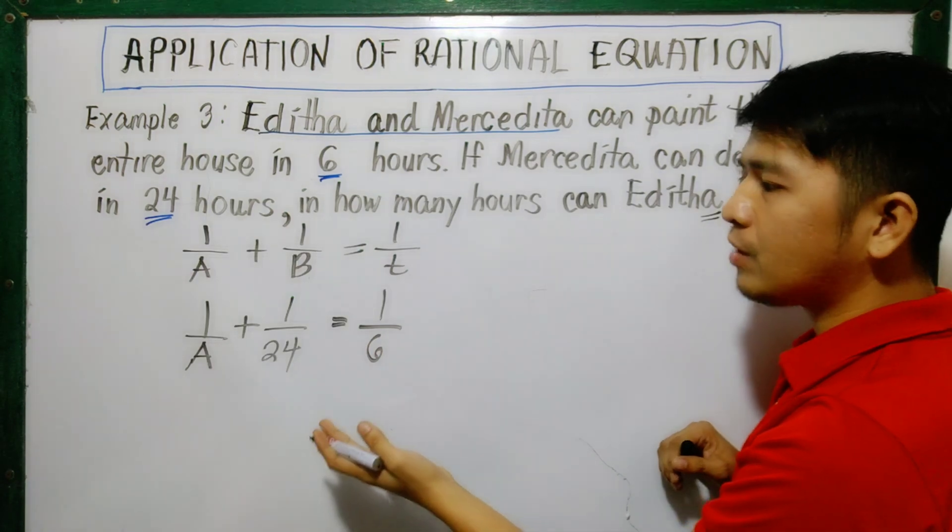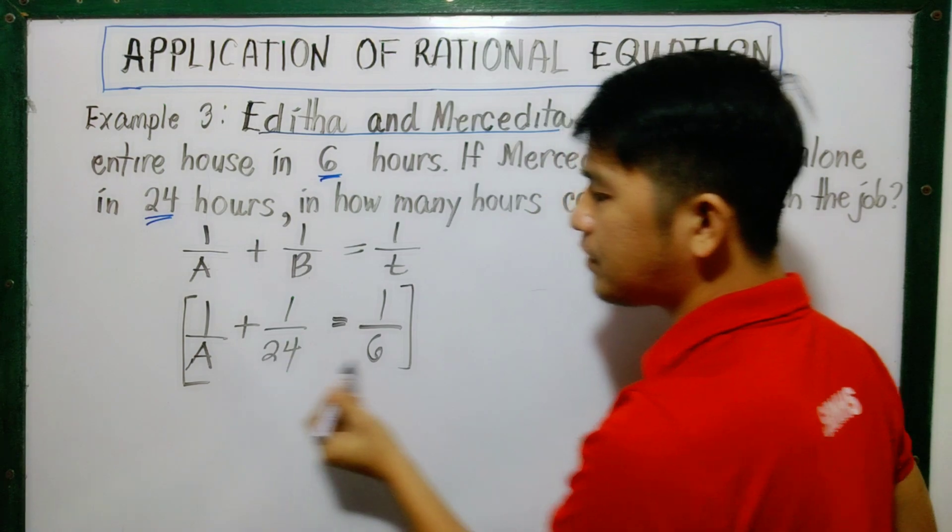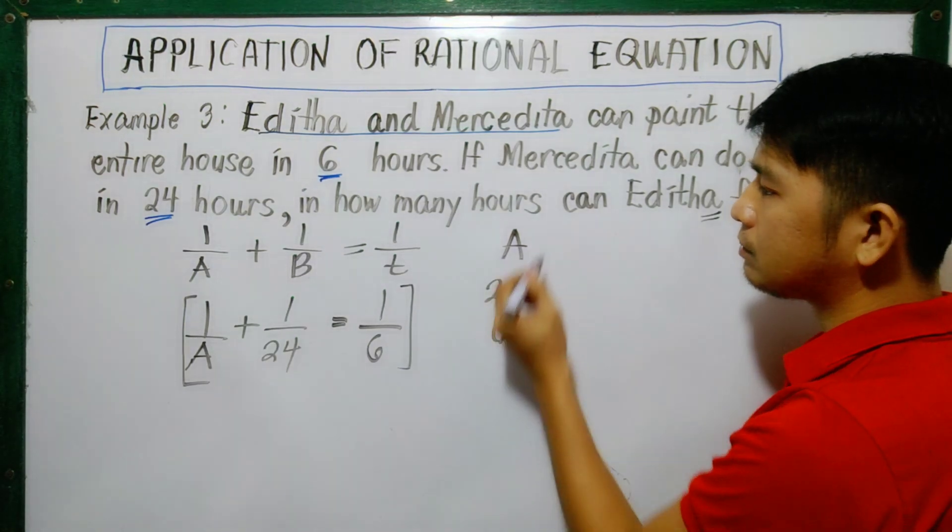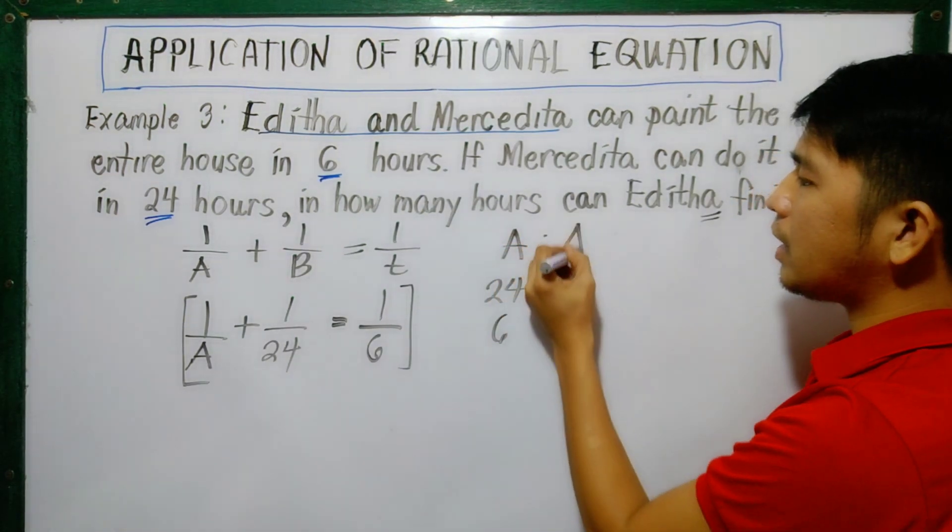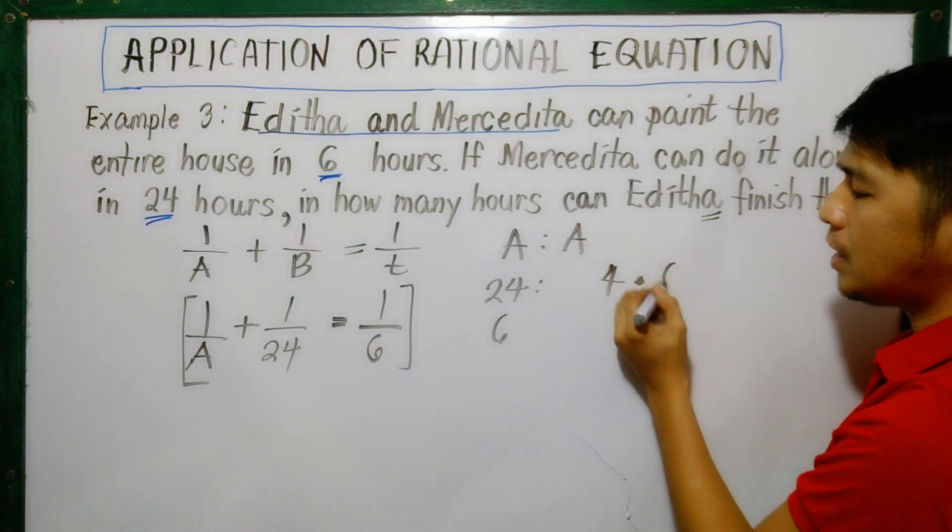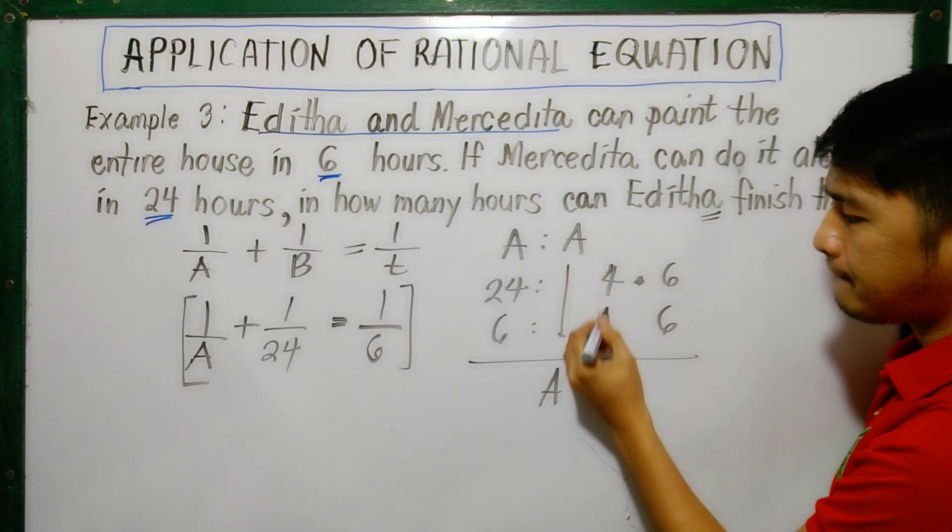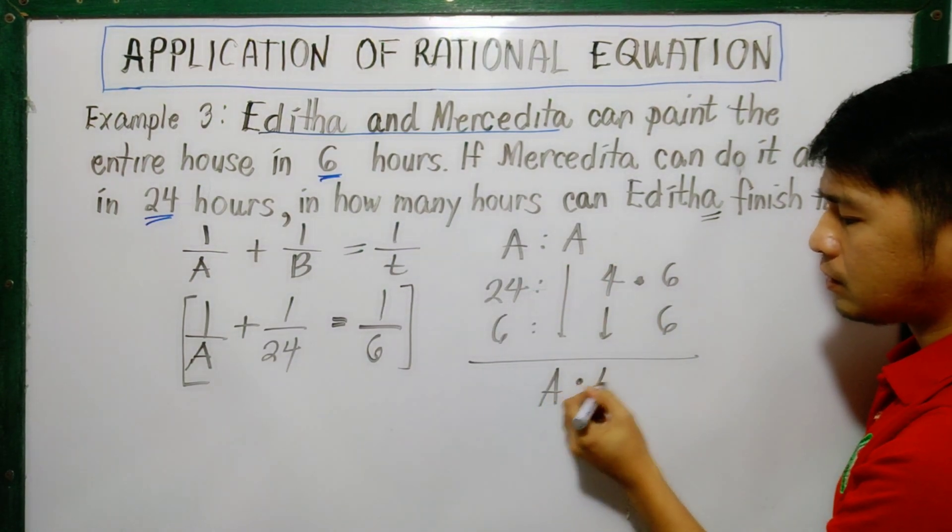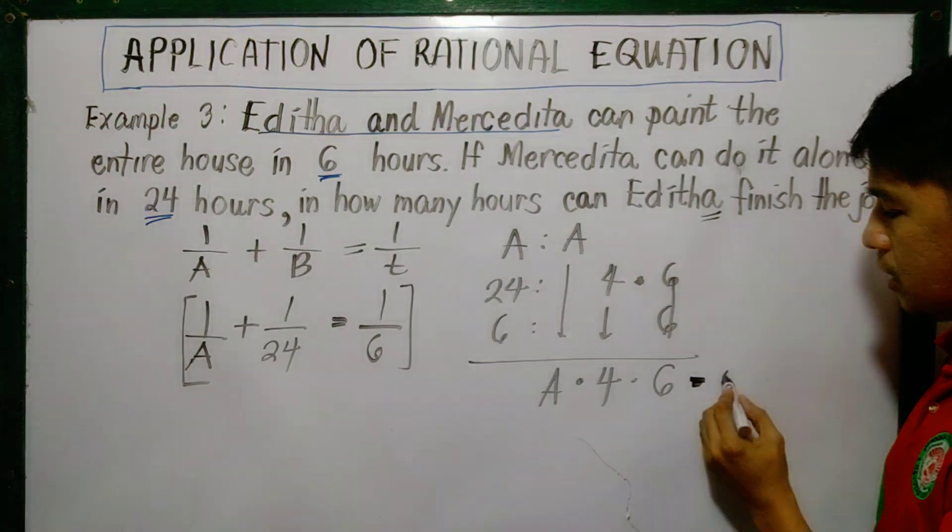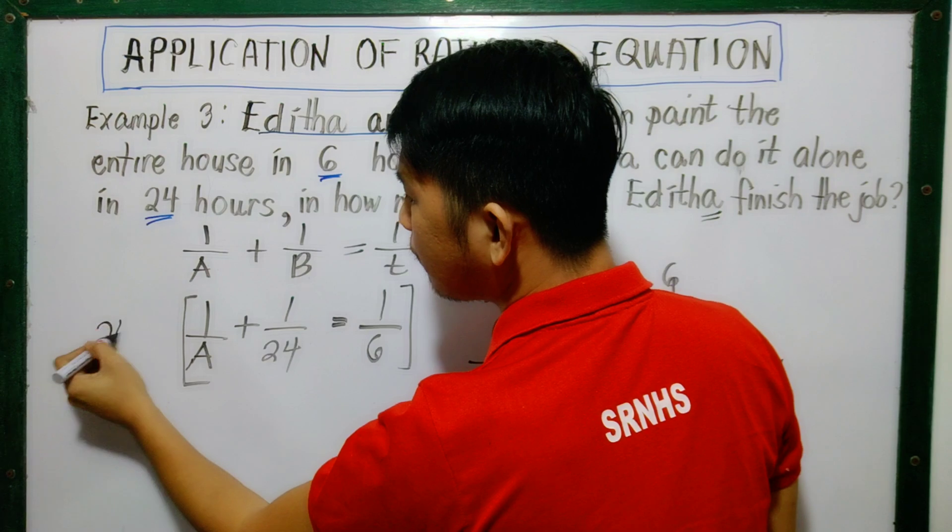Again, to solve this kind of rational equation, we will multiply it first by the LCD. So we have A, 24, and 6. A is still A. 24 can be 4 times 6, and match the 6 here. So bring down A, bring down 4, and then copy as 1 the 6. So the LCD now is 24A. We will multiply this by 24A.